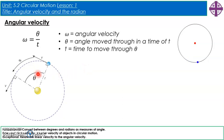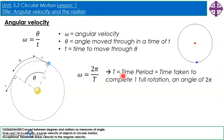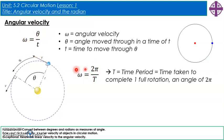There's another equation for angular velocity: omega equals 2π over capital T. Capital T is the time period — the time it takes to complete one full rotation. When an object completes one full rotation, the angle it has gone through is 2π, so this is just a specific case of omega = theta/t where theta = 2π and t is the time period.